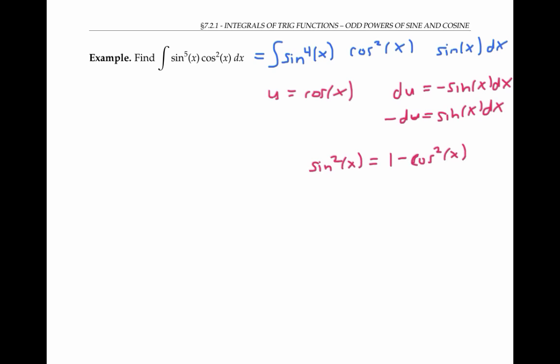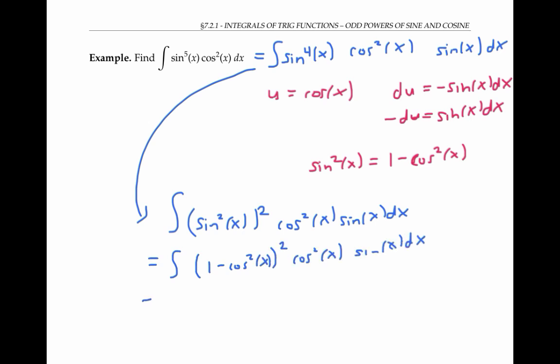So let's rewrite this sine to the fourth as sine squared of x squared. That allows us to substitute in one minus cosine squared of x for sine squared of x. And now we can replace everything with u's and du's.